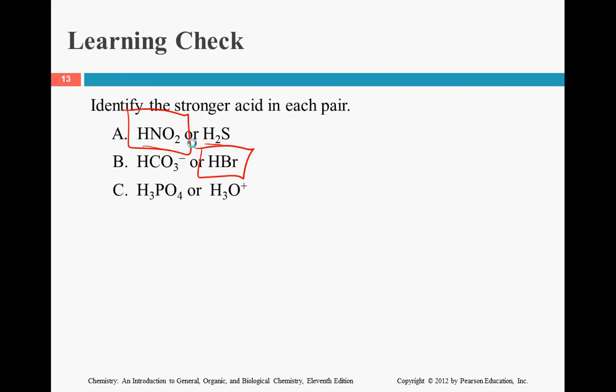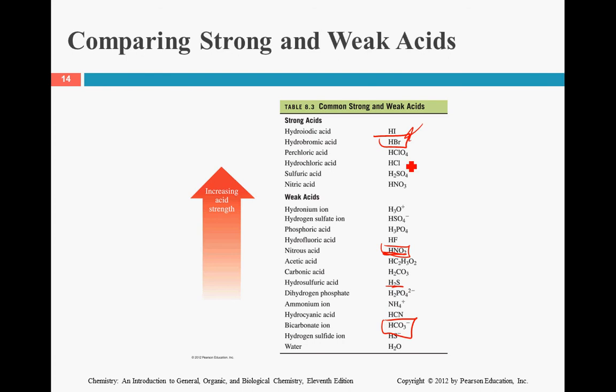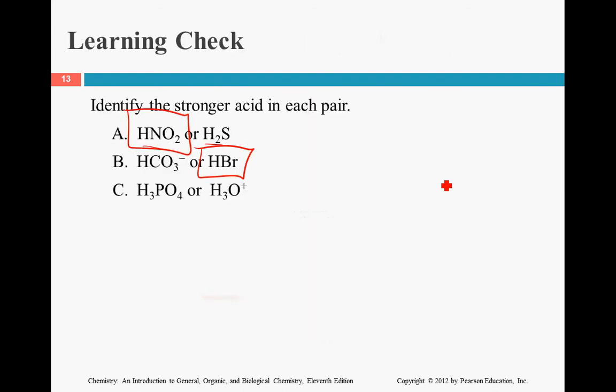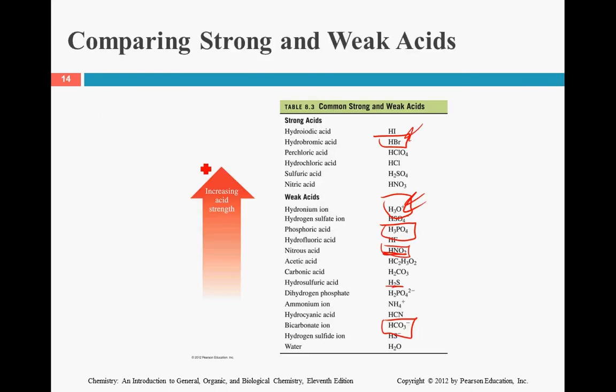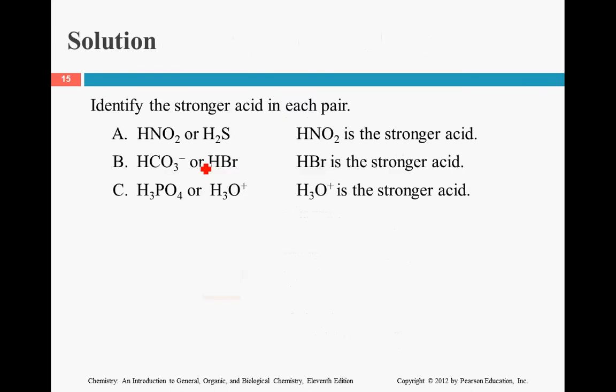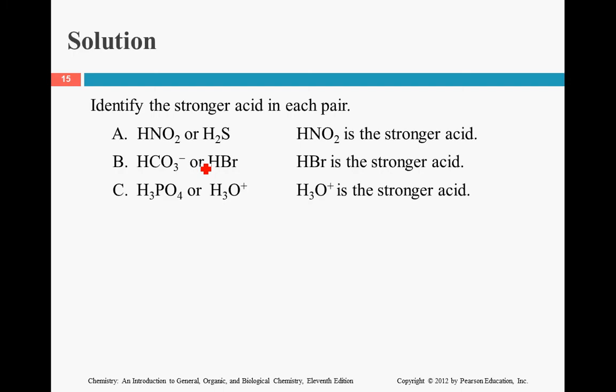And then H3PO4 and H3O plus. H3PO4 is right here. H3O plus is right here. That means H3PO4 is the stronger acid because it's higher on the chart. And here's our answers once again. That is an overview of the differences between strong and weak acids and bases.